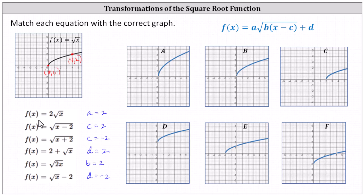For the first function where a equals two, we have a vertical stretch by a factor of two, which affects the y values. To find the corresponding points on the transformed function, we would multiply the y values by two, giving us (0, 0) and (4, 4). Looking at the six graphs, only one shows a vertical stretch by a factor of two, which is the first graph. Notice it passes through (0, 0) as well as (4, 4).